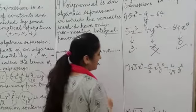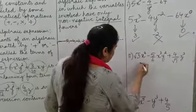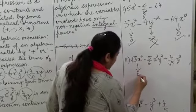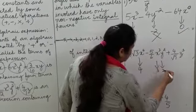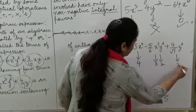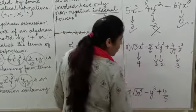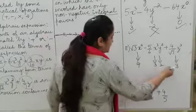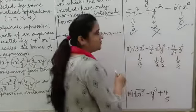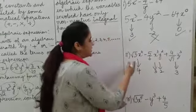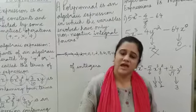Let's take another example. This algebraic expression has 3 terms. The first term has variable x with power 4. The second term has two variables x and y with powers 3 and 2. The third term has variable x with power 3. All the powers of the variables are whole numbers, so since all variables have non-negative integral powers, this expression is an algebraic expression as well as a polynomial.